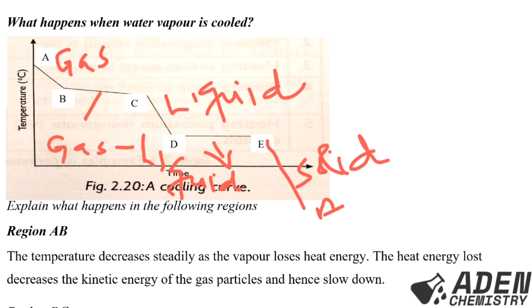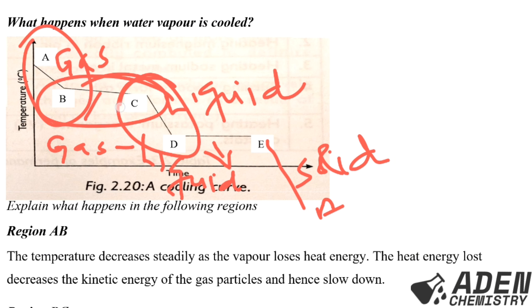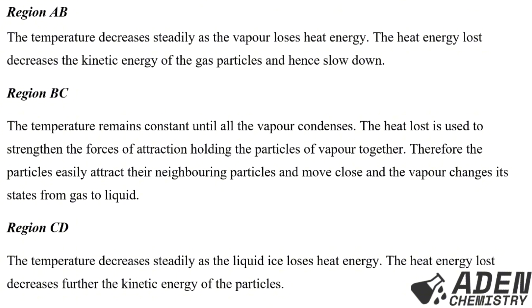We are supposed to explain what happens in regions AB, BC, CD, and DE. In region AB, the temperature decreases steadily because the temperature has dropped as the vapor or gas loses heat energy.